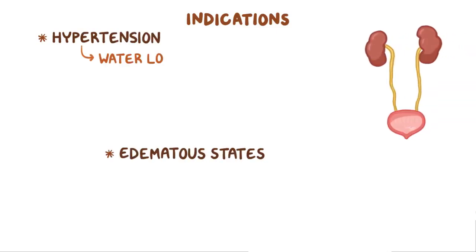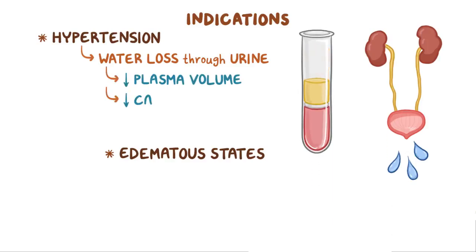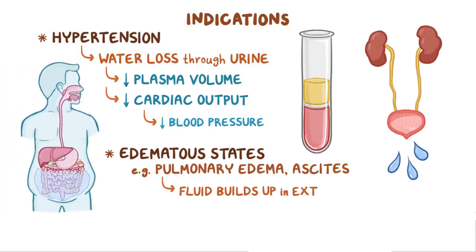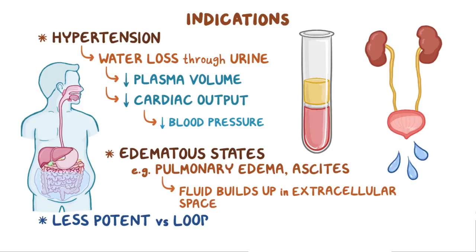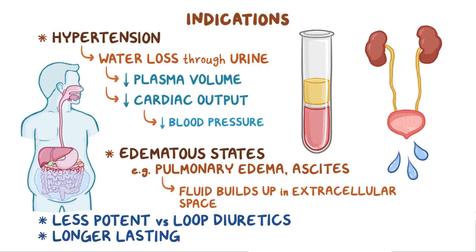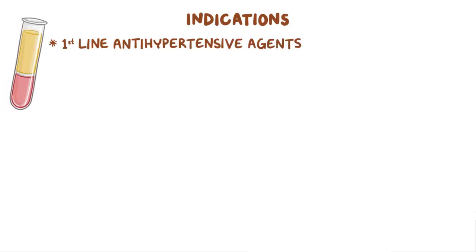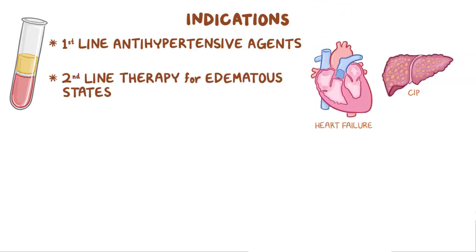The major indication for these diuretics is the management of hypertension and edematous states. Since these medications cause water loss through the urine, it leads to decreased plasma volume and cardiac output, resulting in lower blood pressure. This also treats edematous states like pulmonary edema or ascites, where fluid builds up in the extracellular space. These medications are less potent in their diuretic effect compared to loop diuretics, but much longer lasting. Thiazides are used mainly as first-line antihypertensive agents, and also as second-line therapy to treat edematous states caused by conditions like heart failure or cirrhosis.